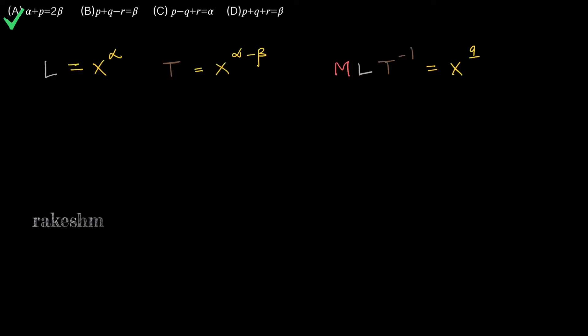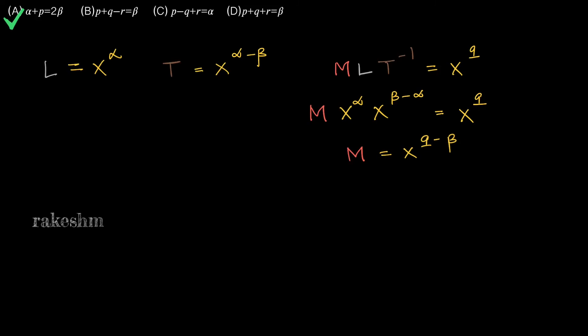Moving on, we have L equals x power alpha and T equals x power alpha minus beta. Linear momentum is given as x power q, so M L T power minus one equals x power q. Substituting L as x power alpha and T power minus one as x power beta minus alpha, we get m times x power alpha times x power beta minus alpha equals x power q. Simplifying, we get m equal to x power q minus beta.